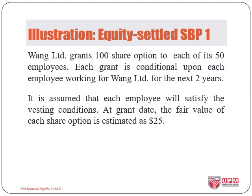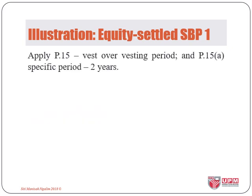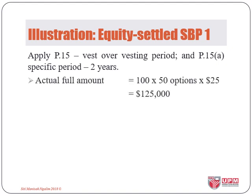Let us now look at a few illustrations of equity-settled SBP transactions. For the first illustration, Wang Limited granted 100 share options to each of its 50 employees with a two-year service condition. At grant date, the fair value of the equity instrument was estimated at $25. For this SBP scheme, we shall recognise the fair value of the instruments for the 50 employees over the two-year period. The estimated full amount will be $125,000 given by 100 options for 50 employees at a fair value of $25.